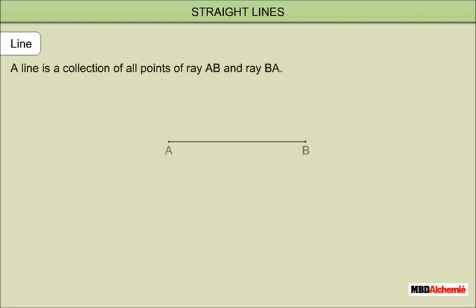A line is a collection of all points of ray AB and ray BA. A line is named by using any two points on the line — AB or BA. It has no endpoints.